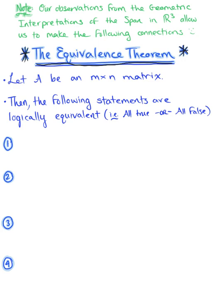We want to begin by letting A be some M by N matrix. The following four statements are logically equivalent, meaning they are either all true or they are all false.